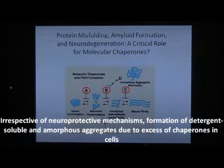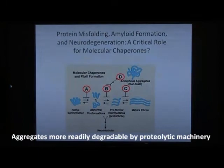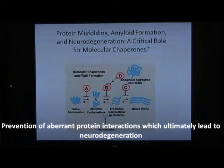Irrespective of the neuroprotective mechanisms that they invoke, an excess of chaperones in cells leads to formation of detergent-soluble and amorphous aggregates, which is shown by D. These aggregates are degraded more readily by the proteolytic machinery, thus preventing aberrant protein interactions that would otherwise lead to a cascade of events culminating in neurodegeneration.